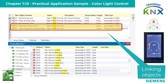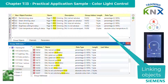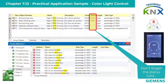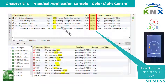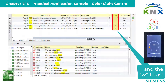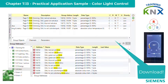On page 12, the dimming value and the absolute color temperature are linked. However, it is recommended to also set the respective status address behind the control addresses and also to activate the read flag. This ensures that the display of the control page always remains up to date, even when controlled via other inputs.